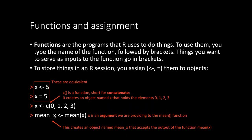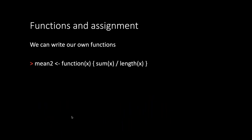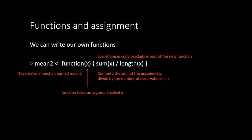To summarize: the arrow and equals sign are equivalent; c is a function short for concatenate that creates an object holding those elements; x is an argument we're running the function mean on; and we're saving the output in the object mean_x. We can also write our own functions — just be careful not to name new functions the same as existing ones. For example, we could make a function called mean2 that takes x and evaluates the sum of x divided by the number of x's — that's the arithmetic mean.